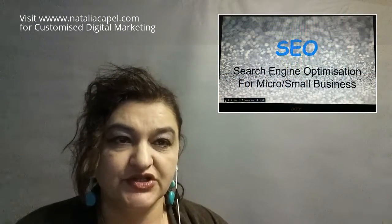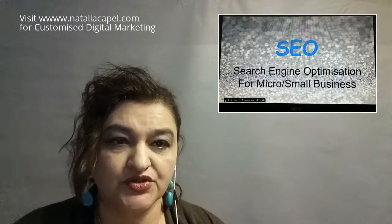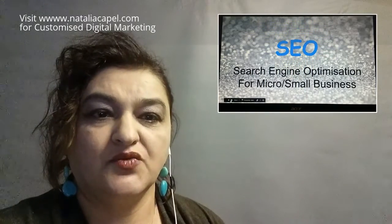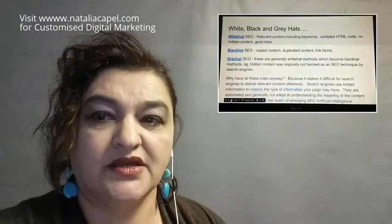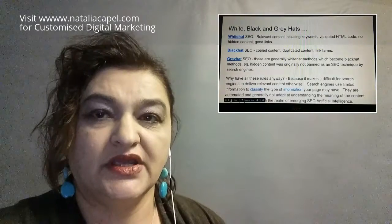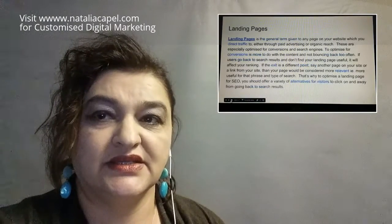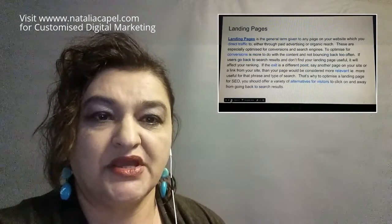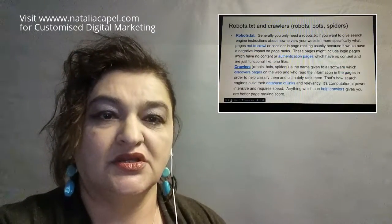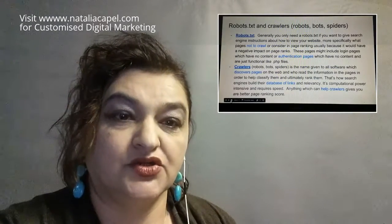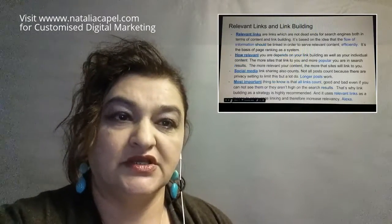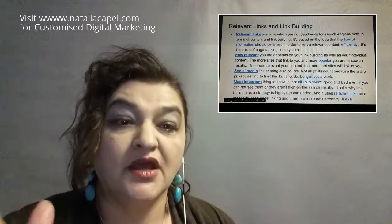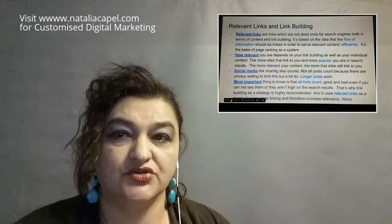This is part five of search engine optimization for micro small business. We've done white, black, and grey hat SEO, better tags and data sets, landing pages, robots.txt, and crawlers. Now we're going to do relevant links and link building.